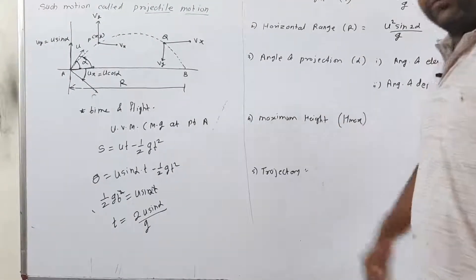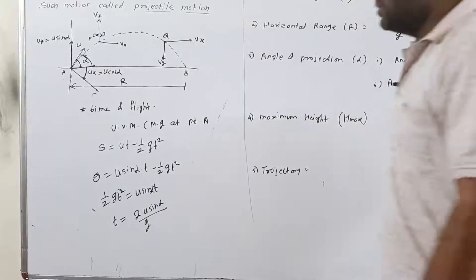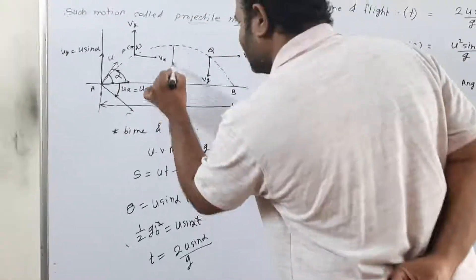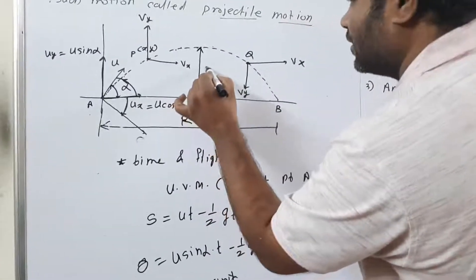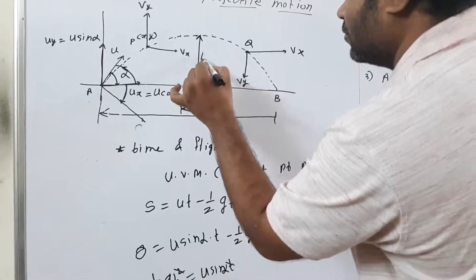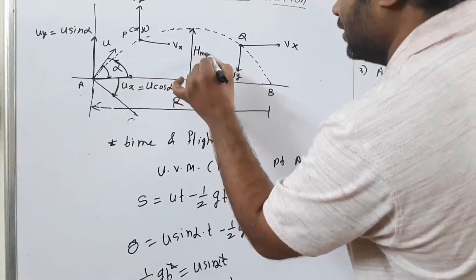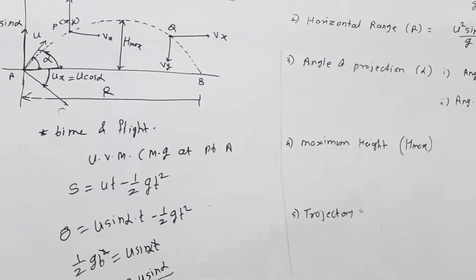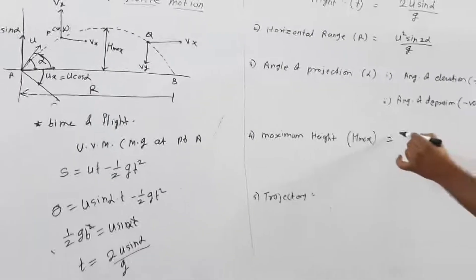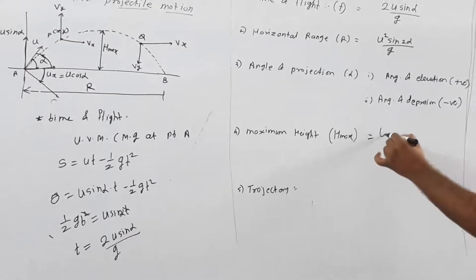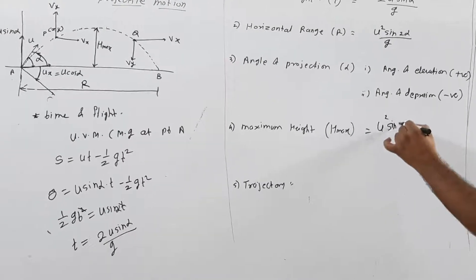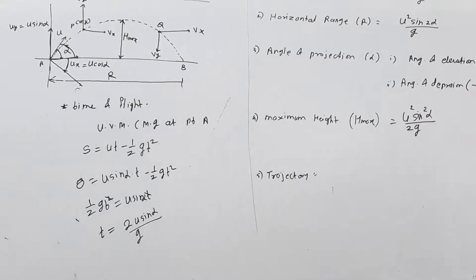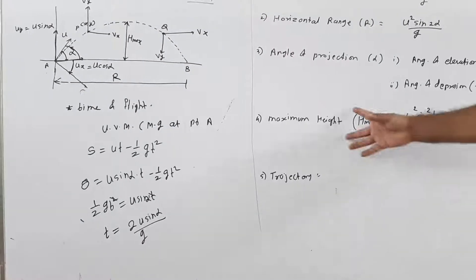The next important term is maximum height. Maximum height is the maximum vertical distance covered by the particle during projectile motion, denoted H_max. The equation to find maximum height is H_max = U² sin² alpha / 2g.